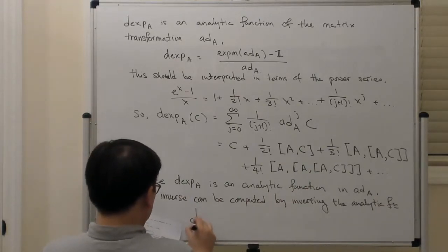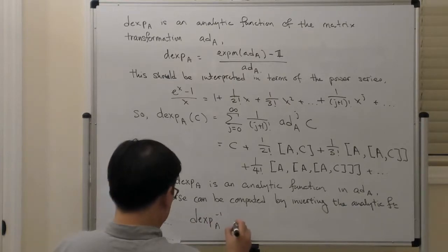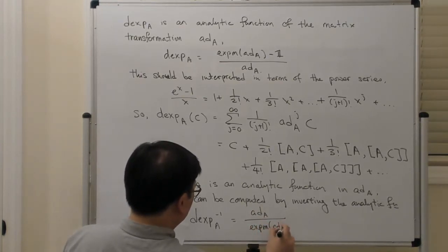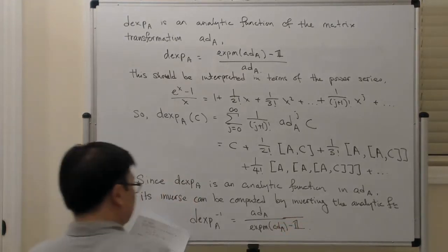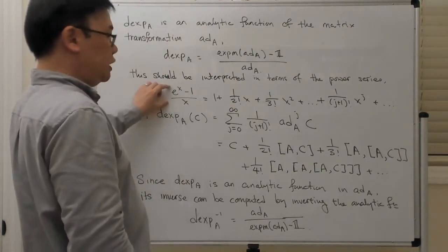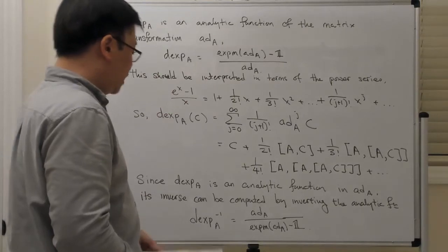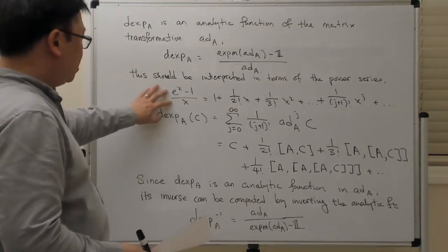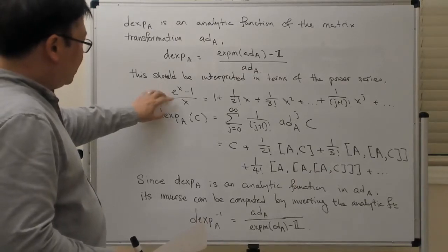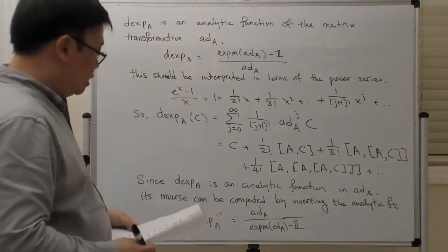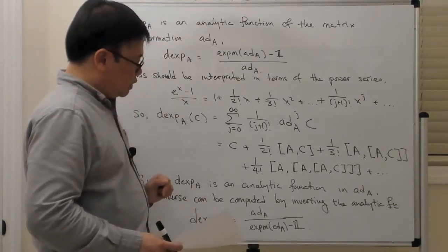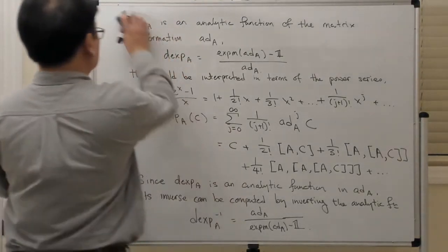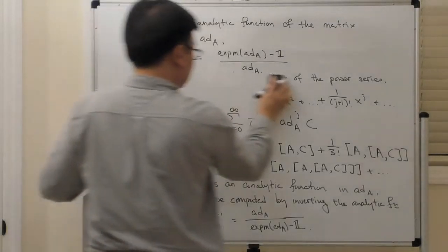That means dexp A inverse is equal to ad A over the matrix exponential of ad A minus the identity. This is what you obtain by taking the reciprocal and substituting x equal to ad A into that expression. In the same way that you look at the power series for e to the x minus 1 over x to compute dexp A, if you want to compute dexp A inverse you can look at the power series for x over e to the x minus 1.